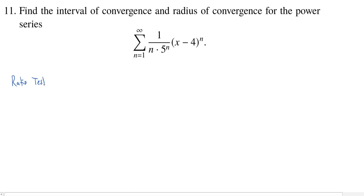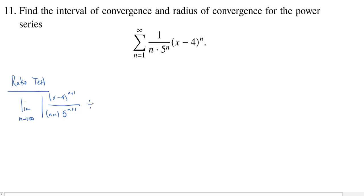I'm partial to the root test myself, but the ratio test is as good as any — well, mathematically the root test is a little bit better, but let's not go down that road. So we're going to take the absolute value: we need the (n+1)th term, which will be (x minus 4) to the n+1 over (n+1) times 5 to the n+1, divided by the nth term, which is (x minus 4) to the n over n times 5 to the n.